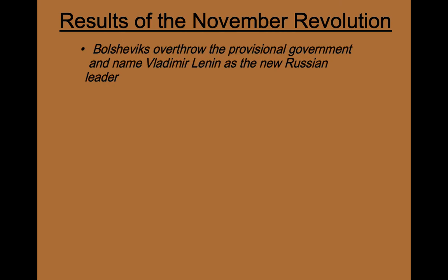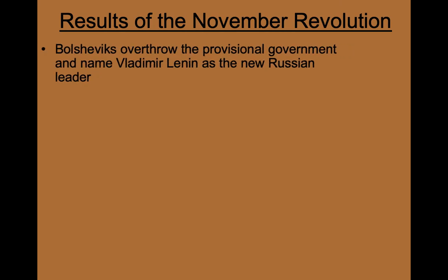By the end of November 1917, the Russian revolution had had its most significant impact. The Bolsheviks, along with Lenin and Trotsky, had overthrown the provisional government and named Lenin as the new leader of the Russian nation.